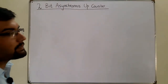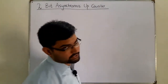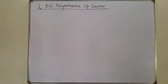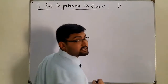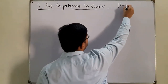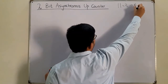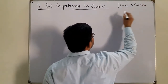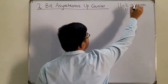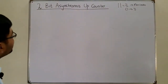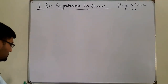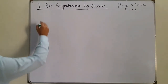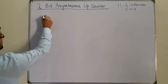An up counter goes from a low state to a higher state. Now for two bits, you know that the maximum number we can represent is the decimal equivalent of three. So this counter will be counting from zero to three. To design this counter with two bits, we require one flip-flop for each bit, so we require two flip-flops in this particular case.